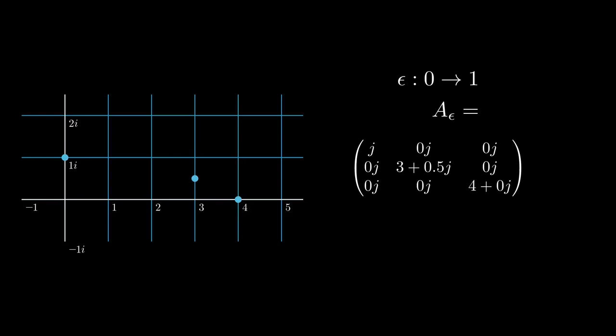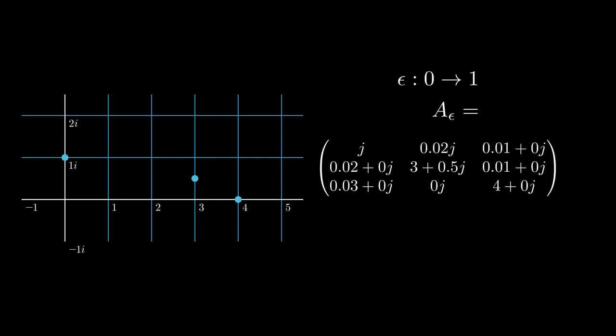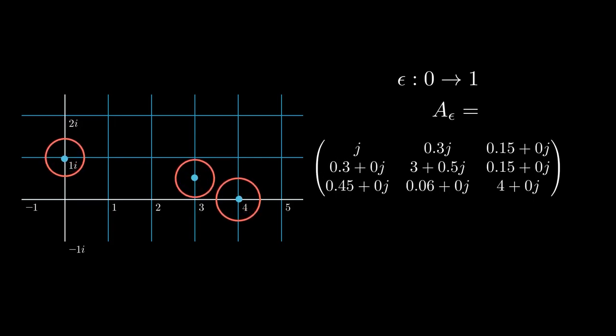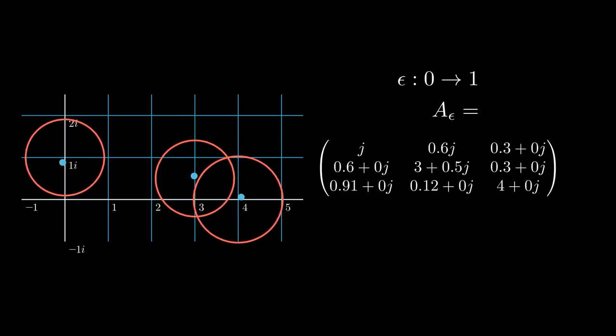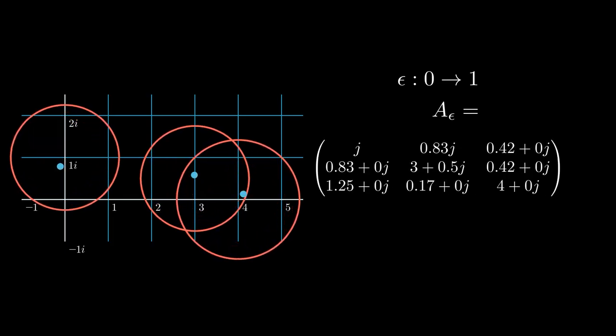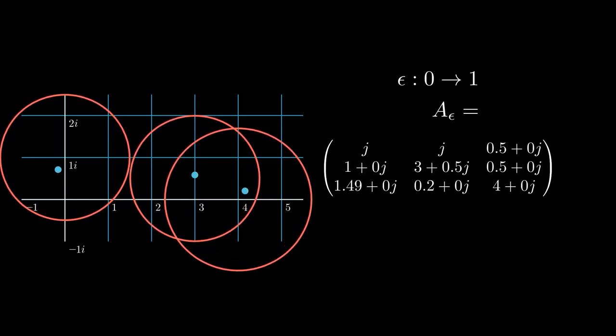Now, starting from epsilon equals 0, I want to slowly increase epsilon to 1 and keep track of A_epsilon. That means our matrix A_epsilon will change starting from matrix D and ending with matrix A again. Also, this change is somehow continuous. Let's look what's gonna happen here.